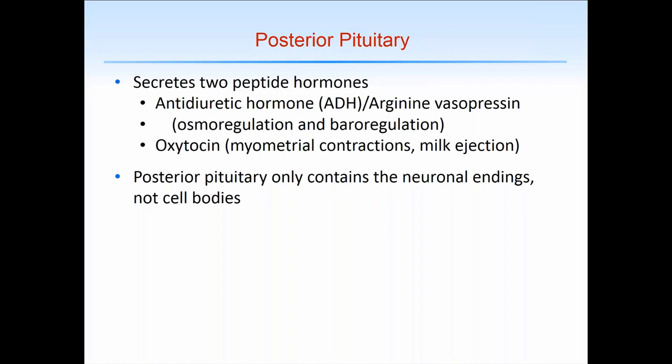Oxytocin has critical roles both in myometrial contractions, particularly at the time of labor and delivery, as well as milk ejection during lactation. The posterior pituitary only contains the neuronal endings, not the cell bodies. Those cell bodies are up in the hypothalamus where they are impacted by axonal connections throughout the CNS.